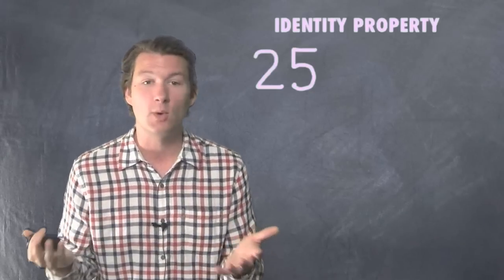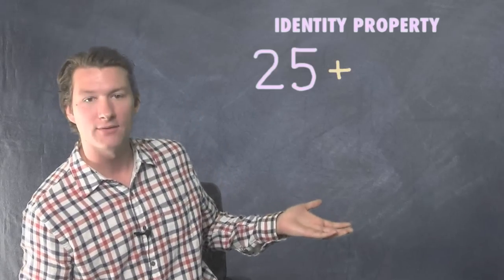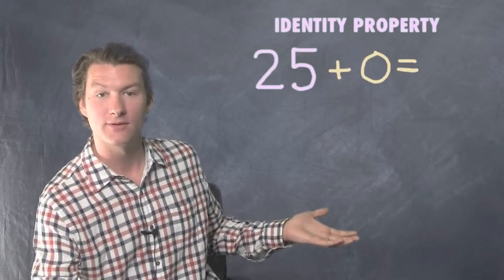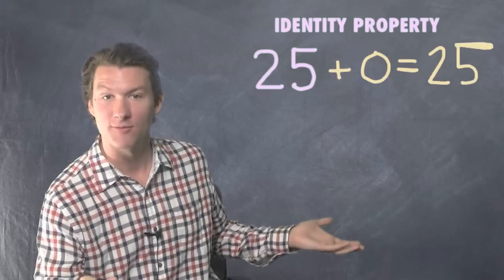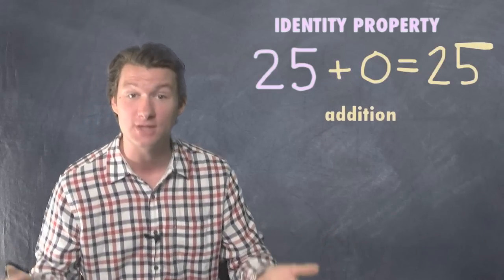Let's say we have 25. All right, what do you got to add to 25 for it to stay 25? Well, zero because 25 plus zero is 25. That's the identity property of addition.